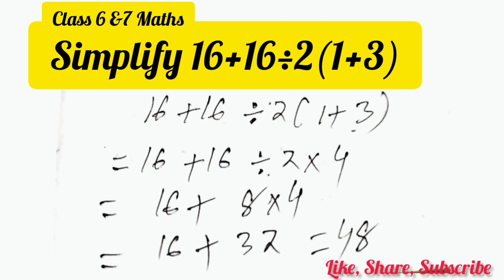How can we simplify this problem? By using the formula BODMAS, that means first we will do the bracket work. So 16 plus 16 divided by 2 multiplied by 1 plus 3 equals 16 plus 16 divided by 2 multiplied by 4.